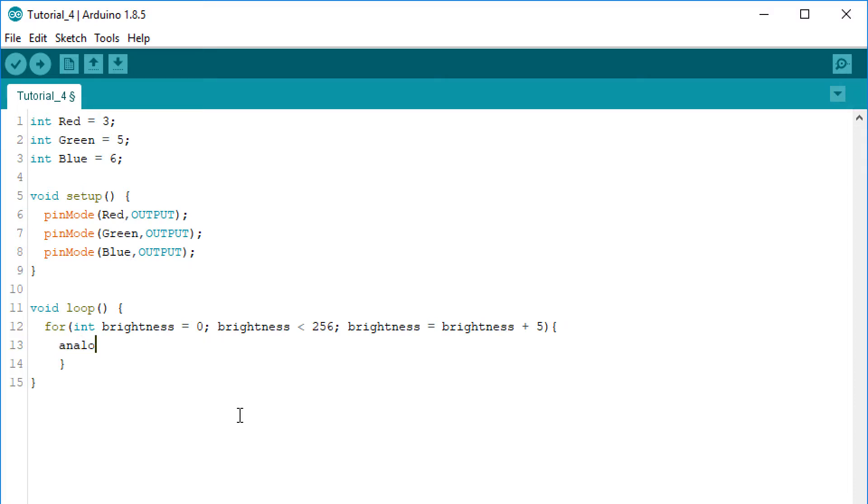We can apply the PWM signal with the analogWrite function. The first argument is which pin you want to address. This will be the red pin. The second is the duty cycle between 0 and 255. For this we will use the looping variable brightness. After this we want to wait some time with the delay function. 20ms will do.